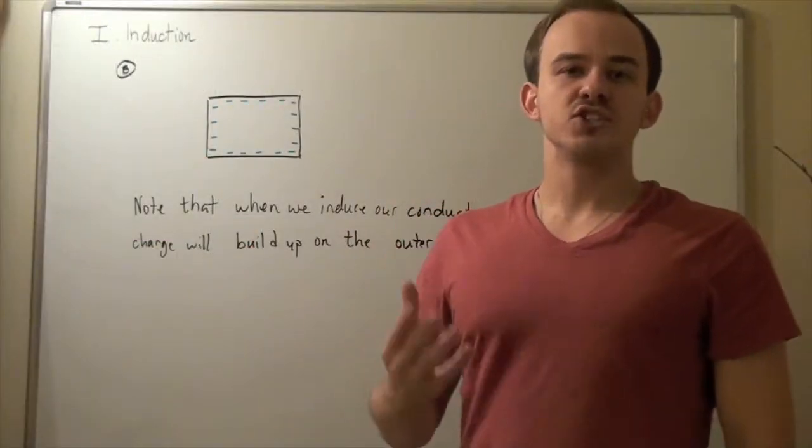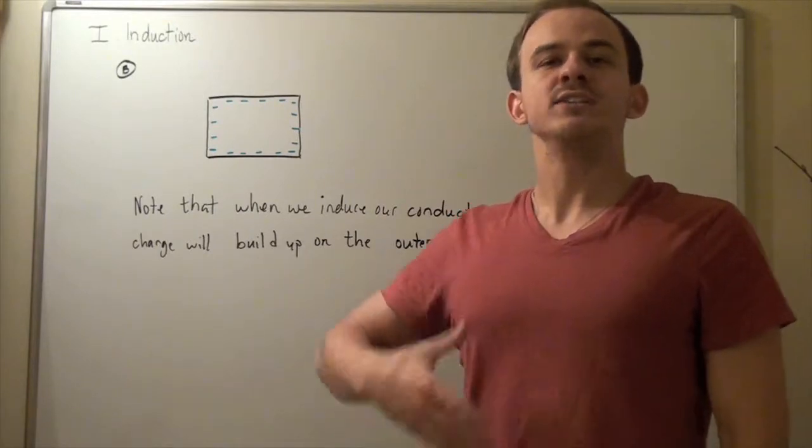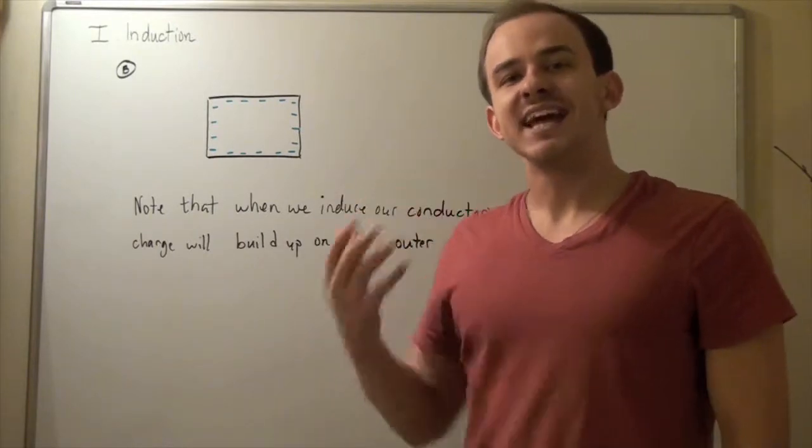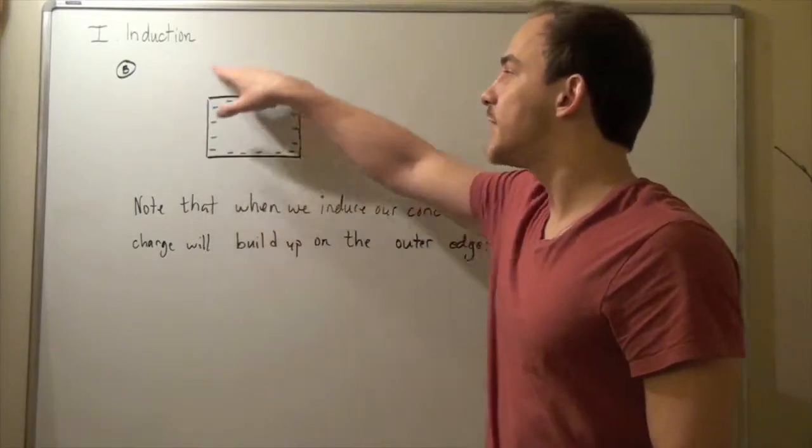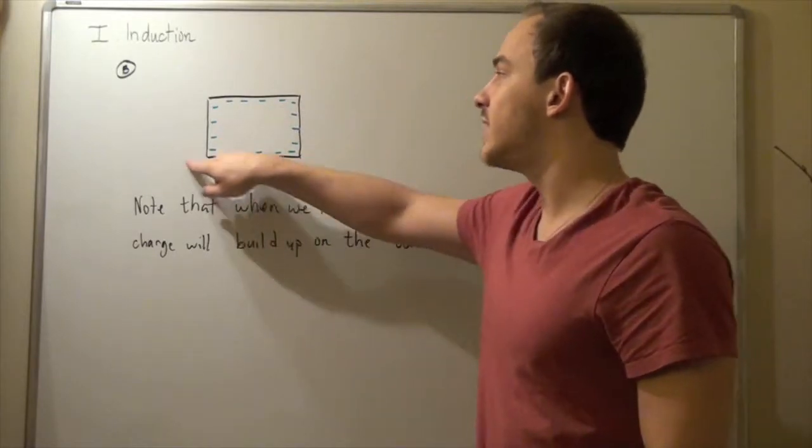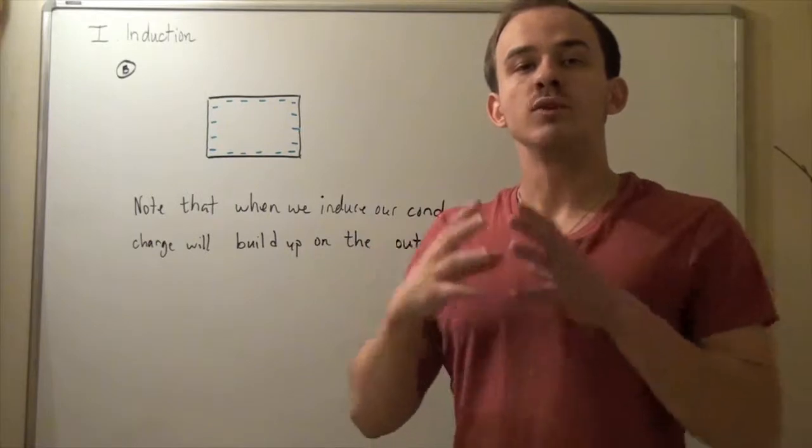The last thing I want to mention is the following. When we take our neutral conductor and we induce it and it becomes a negative conductor, the extra negative charge builds up on the surface, on the edges of our conductor.